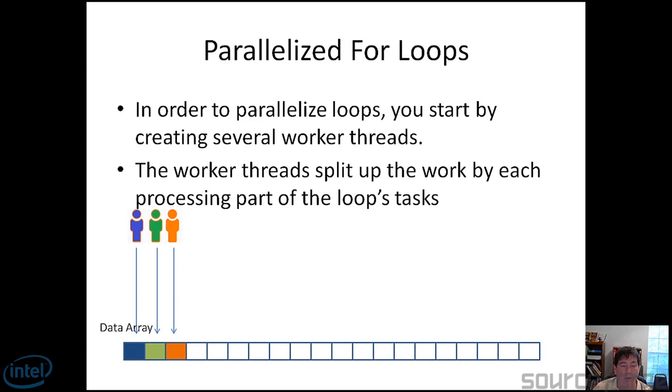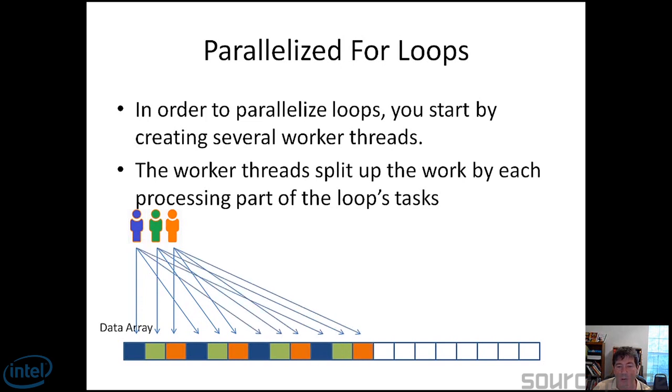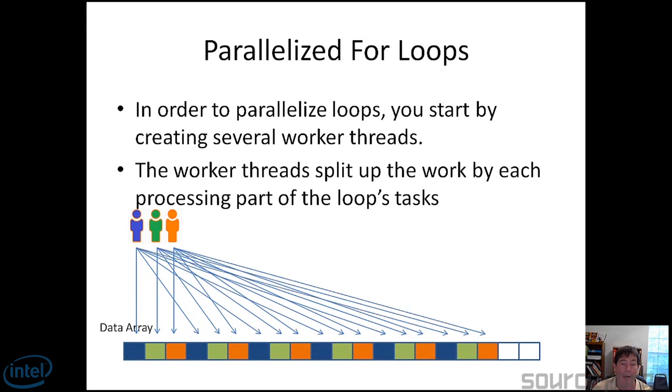So now once that's done, they're going to move on. Blue, green, orange. When they're done, blue, green, orange, and so forth on down the line. And in this way, theoretically, it's three times as fast as just a single sequential loop processing.